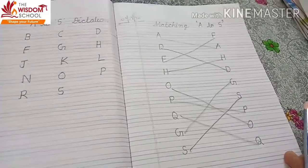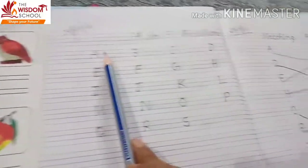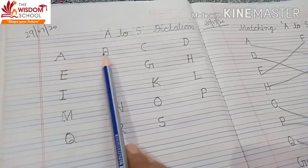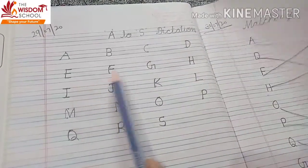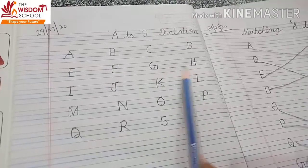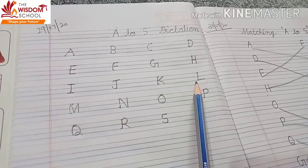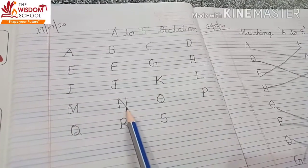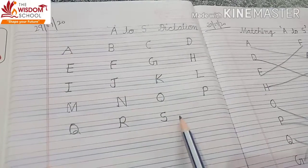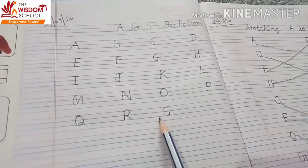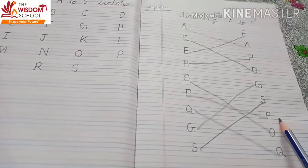एक बार हम revise करें — A to S sound। Okay, speak with me: A, B, K, D, A, F, G, H, I, J, K, L, M, N, O, P, Q, R, S। इसी तरह आपने sound को learn करना है और फिर यहां matching करनी है। Okay?